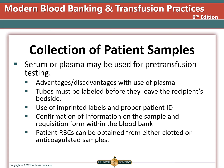Although serum and plasma may be used for pre-transfusion testing, there are some advantages and disadvantages for the use of plasma. Tubes with anticoagulants can be put into the centrifuge earlier, as clot tubes must wait sometimes 10 minutes before spinning. However, plasma does not contain complement activity, which can lead to missing antibodies such as Kidd antibodies, which are only detectable by complement activity.